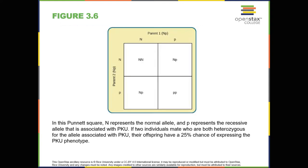Sickle cell anemia is just one of many genetic disorders caused by the pairing of two recessive genes. For example, phenylketonuria (PKU) is a condition in which individuals lack an enzyme that normally converts harmful amino acids into harmless byproducts. If someone with this condition goes untreated, he or she will experience significant deficits in cognitive function, seizures, and increased risk of various psychiatric disorders. Because PKU is a recessive trait, each parent must have at least one copy of the recessive allele in order to produce a child with the condition. So far we've discussed traits that involve just one gene, but few human characteristics are controlled by a single gene. Most traits are polygenic — controlled by more than one gene. Height is one example of a polygenic trait, as are skin color and weight.